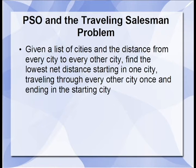After initially getting a grip on the meat of the algorithm, our first task was to apply it to a well-known computer science problem called the traveling salesman. This problem states that given a list of cities and the distance from every city to every other city, find the lowest net distance starting from one city, traveling through every other city only once, and ending in the starting city again.